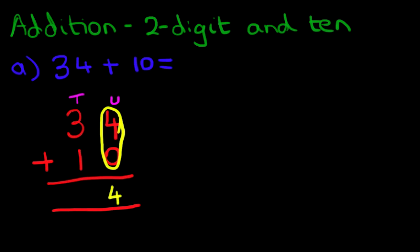And now we do the tens column. That is this column over here. That's 3 plus 1. So what is 3 plus 1? The answer is 4. And we have our answer. 34 plus 10 is 44. We'll give ourselves a little tick there as we got it right.